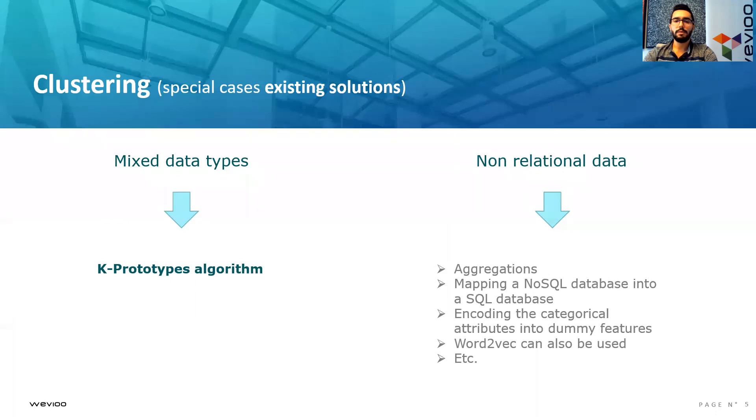We also can encode the categorical attributes into dummy features. This will create a high-dimensional space, and we're going to be using PCA, for example, to reduce the dimensionality. This is another good solution, as described in the article of Huang, where he compared K-prototypes to using PCA followed by K-means.